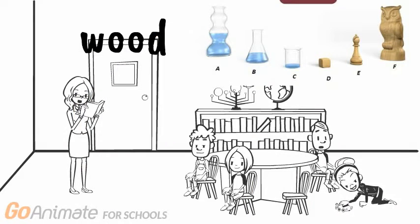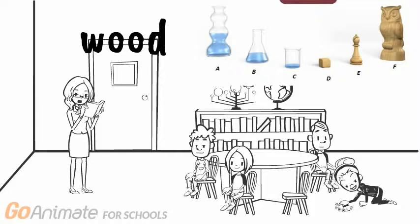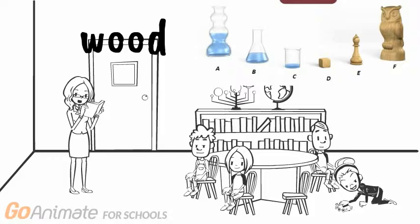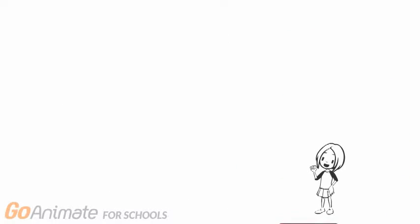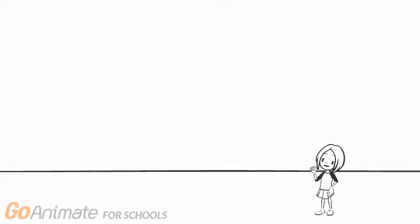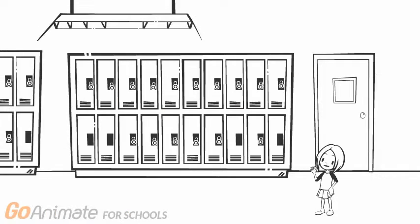The same is true with the wood block, chess piece, and owl. They are all brown and they all have the same density of 0.5 grams per milliliter. The physical properties do not change. And that concludes Physical Properties and Density.